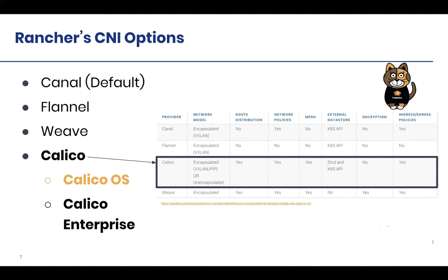The second consideration is around routing distribution — ensuring that the pod networking is locally significant only to the cluster, or whether it needs to be distributed and integrated with the underlay. Third, from a network policy perspective, ensure that when you choose a CNI, it will enable you to use Kubernetes network policies, because it is the responsibility of the CNI to enforce network policies. Kubernetes allows you to define them via the API, but relies on the CNI to actually enforce them. Calico can enforce those policies for you.